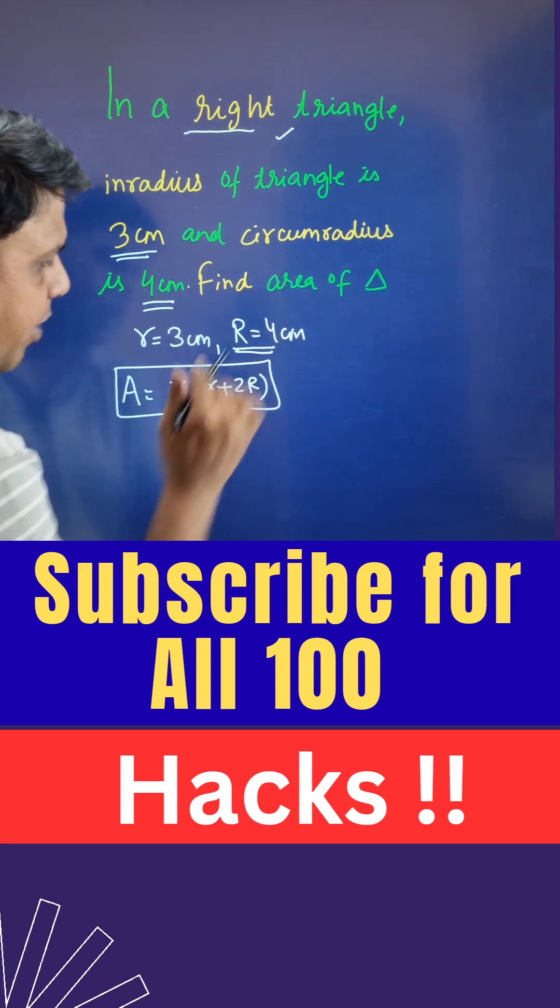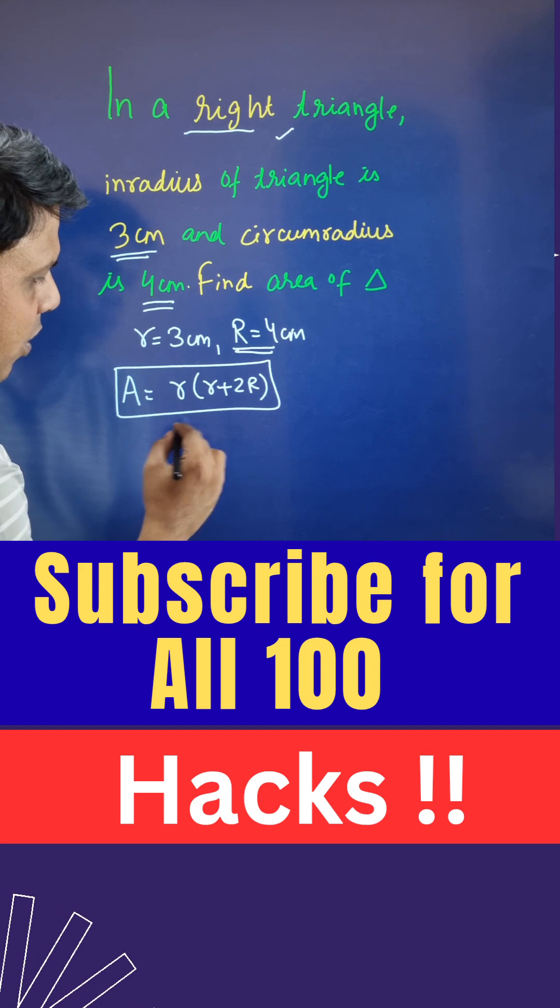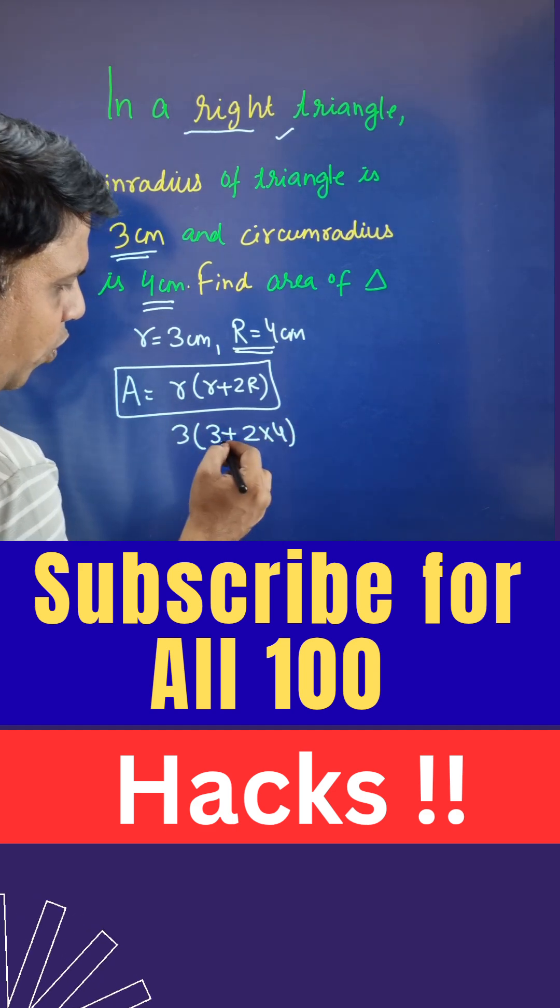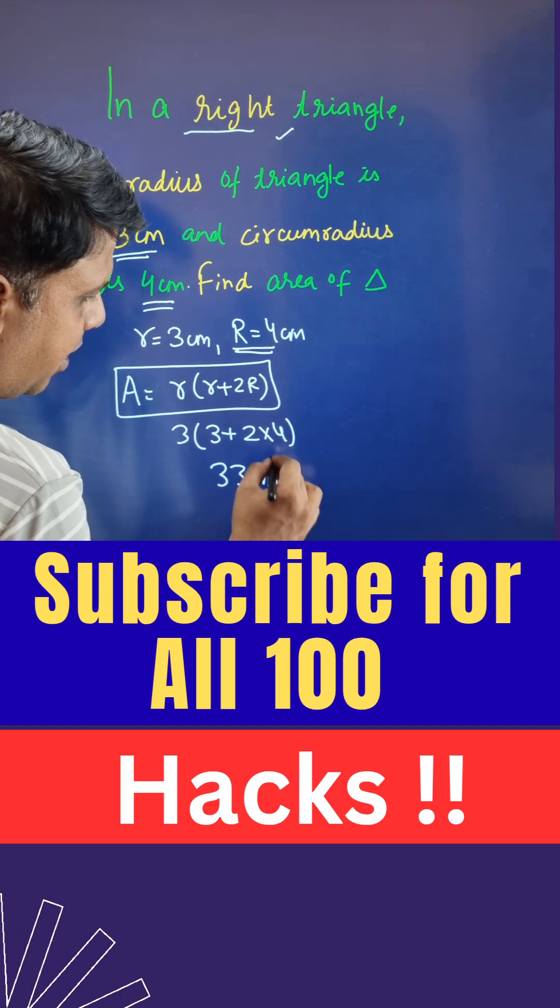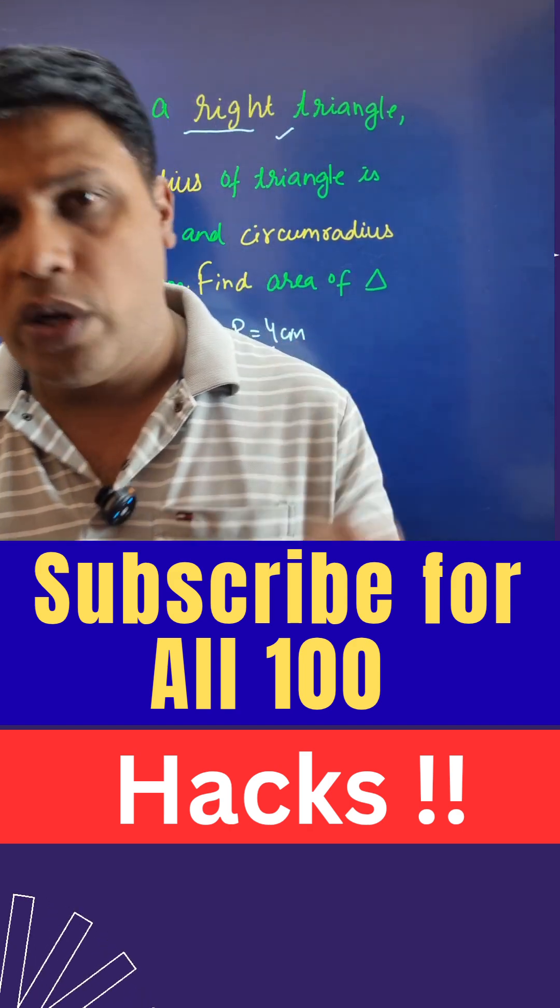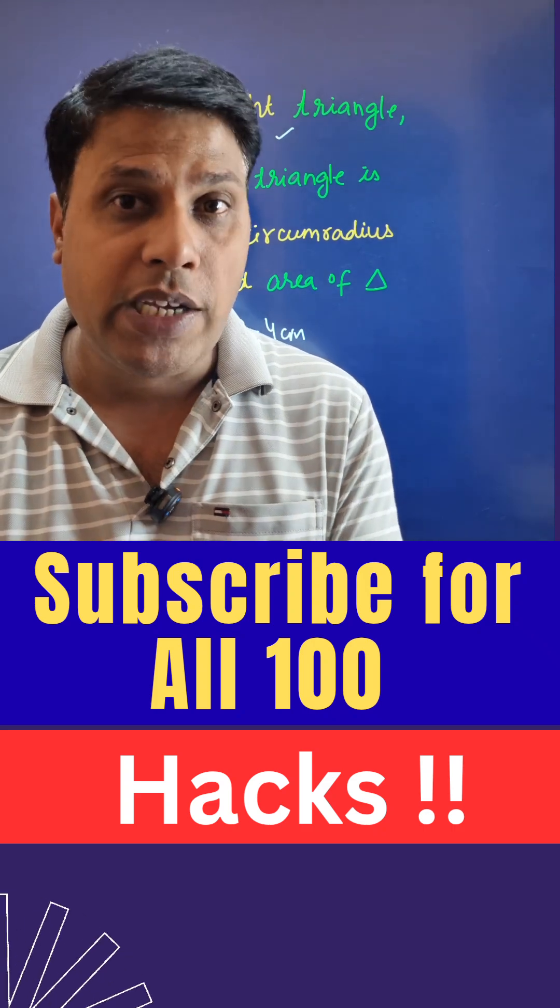So 2 times 4 is 8, plus 3 is 11, 11 into 3 is 33 centimeter square. For more such beautiful results, you can join Quantper at 99. See you in the next shot.